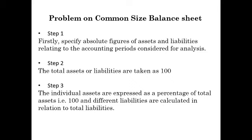The steps for preparing a common size balance sheet are: first, specify the amount of assets and liabilities in column 1 and 2. Second, total assets or total liabilities are considered as 100. Third, all individual assets are expressed as a percentage of total assets — in terms of percentages with respect to the total asset.